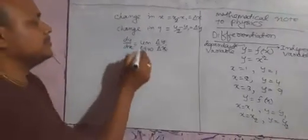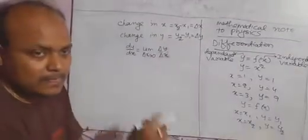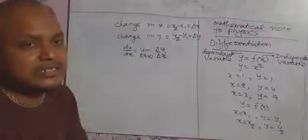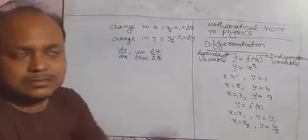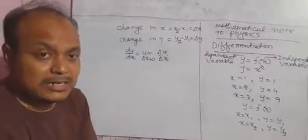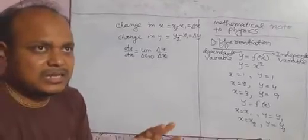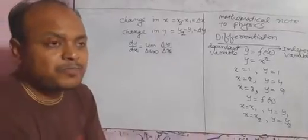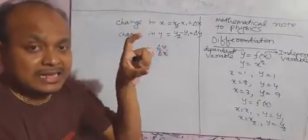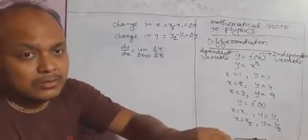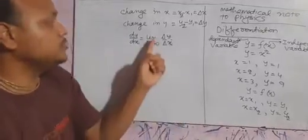This is called limit. Limit delta x tends to 0 means the value of change of x is so small that it tends to 0. For example, in which case do we use limit in mathematics? Consider there is a drop of water in a glass. We can say that the glass has some water. But we also cannot say the glass is empty, because the glass contains one drop of water. Since we can't say the glass has water and we can't say the glass is empty, we use the language: the glass has some water, but that tends to 0. Similarly, here we use limit — the value of x is changed, but the change is very small, so delta x tends to 0.